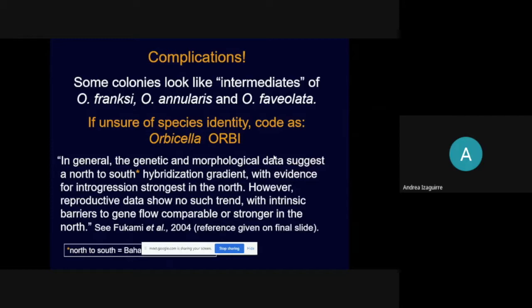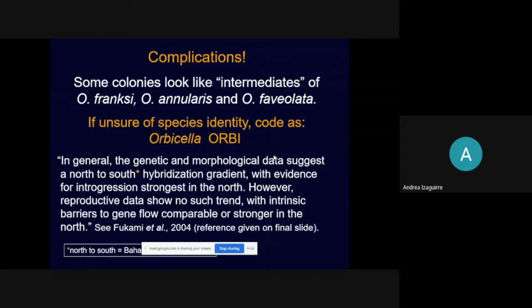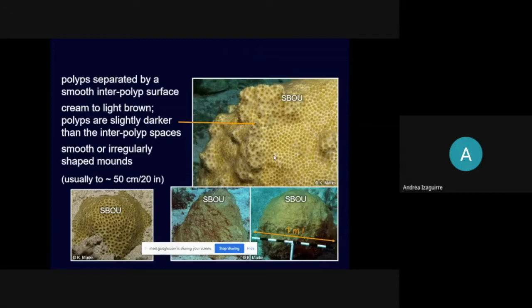Our next coral is Siderastrea siderea (SCIN), which is really easy to identify and very common around here. SCIN will have sunken polyps — it looks like if you took a big ball of clay and started poking it with a pencil, because all of those polyp mouths are sunken. It's usually in a uniform color, gray to yellow to brown. But here in Utila, SCIN always seems to be stressed — instead of stressing to a lighter color, it stresses into a bluish or purplish shade. So you'll see a lot of blue-purple corals and it's going to be SCIN. They're always kind of that color — don't worry if you see that.